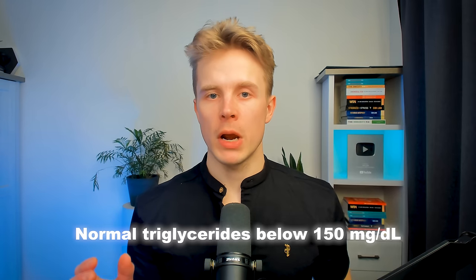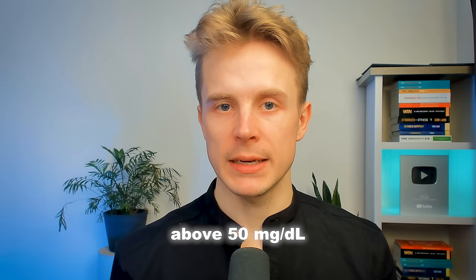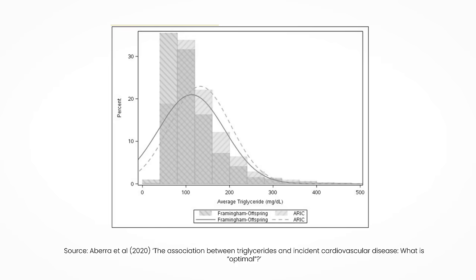The reference range for triglycerides is 150 mg per deciliter, but anything above 50 mg per deciliter already increases the risk of heart disease. If you think you're safe with a triglyceride level of 120 or 130, then you're wrong — having anything above 50 is already linked to a higher risk, even though anything below 150 is considered normal. The reason the reference range is 150 is because most people's triglyceride levels are around 100 to 200. Most people have poor metabolic health and poor blood sugar levels, which increases their triglyceride levels and puts them at higher risk of heart disease.